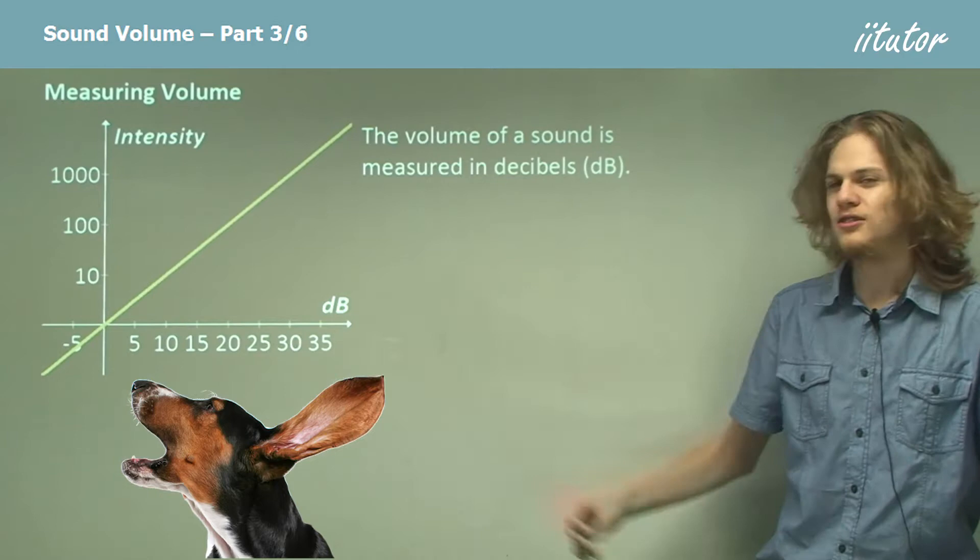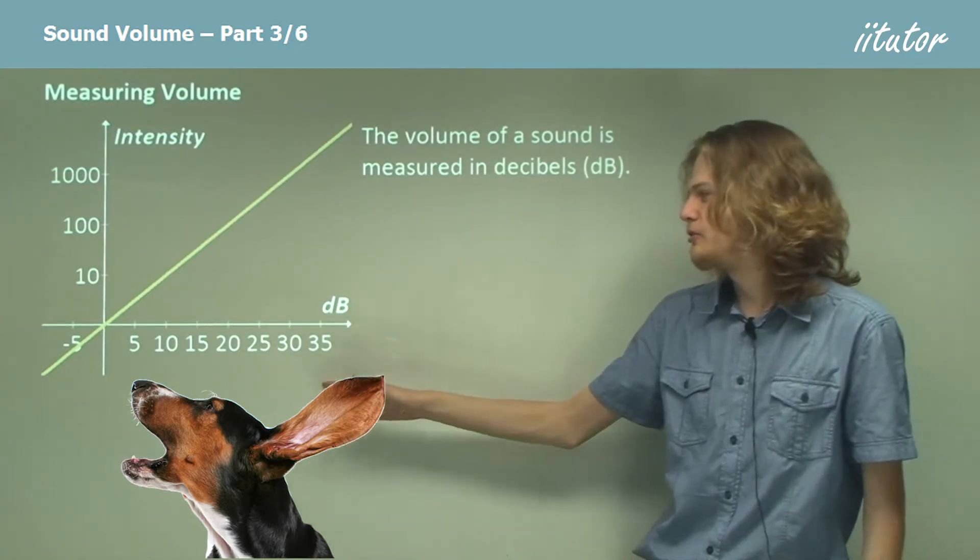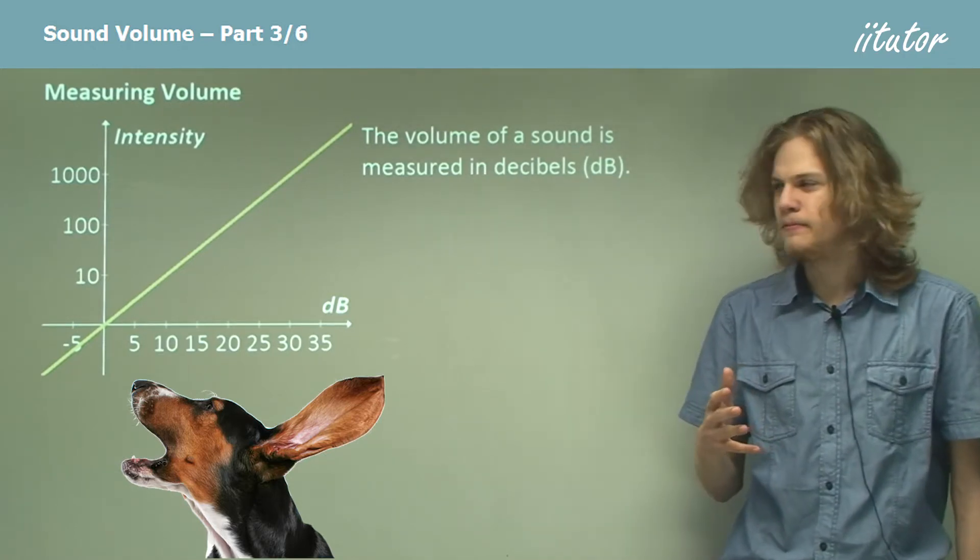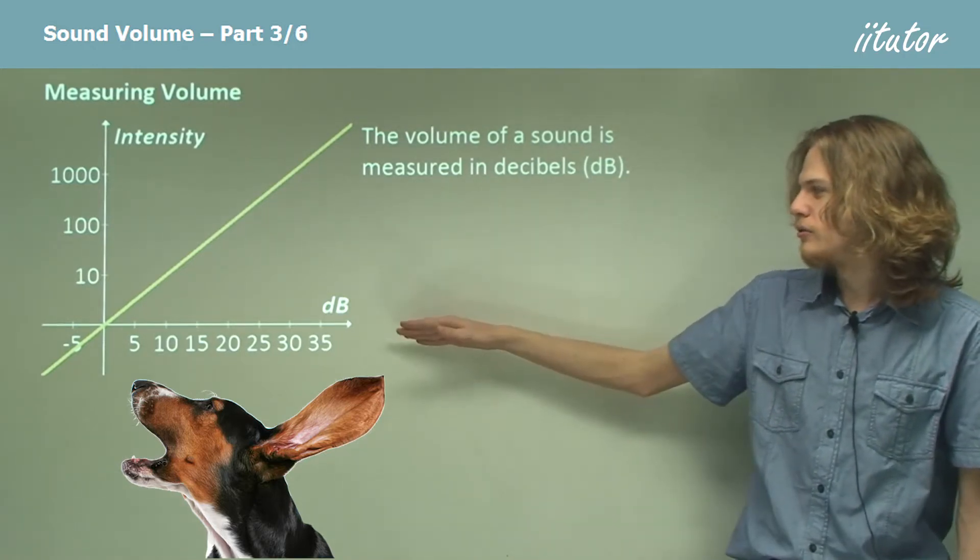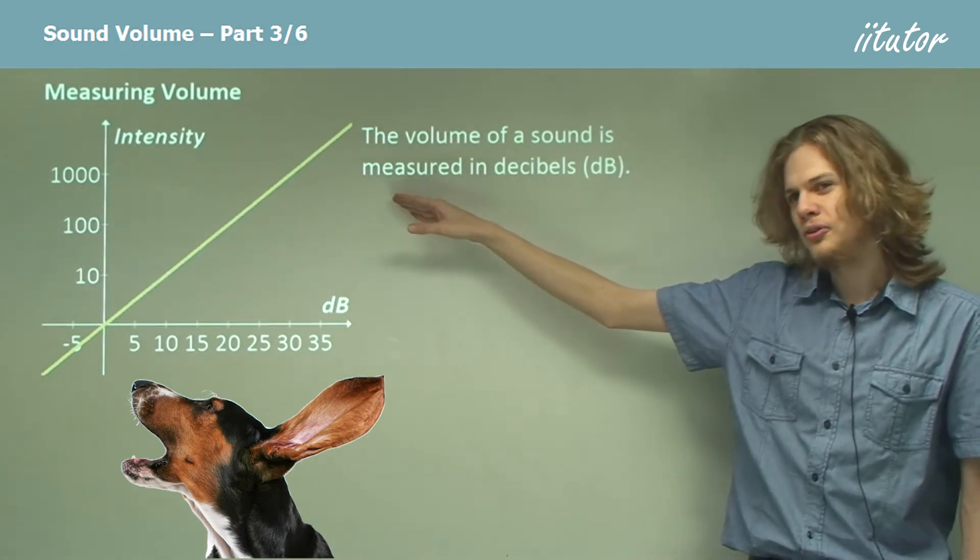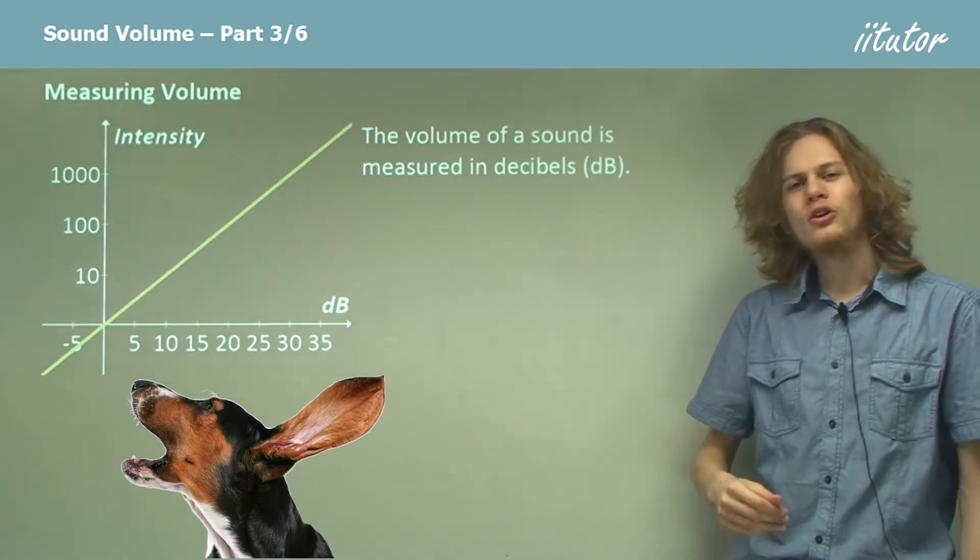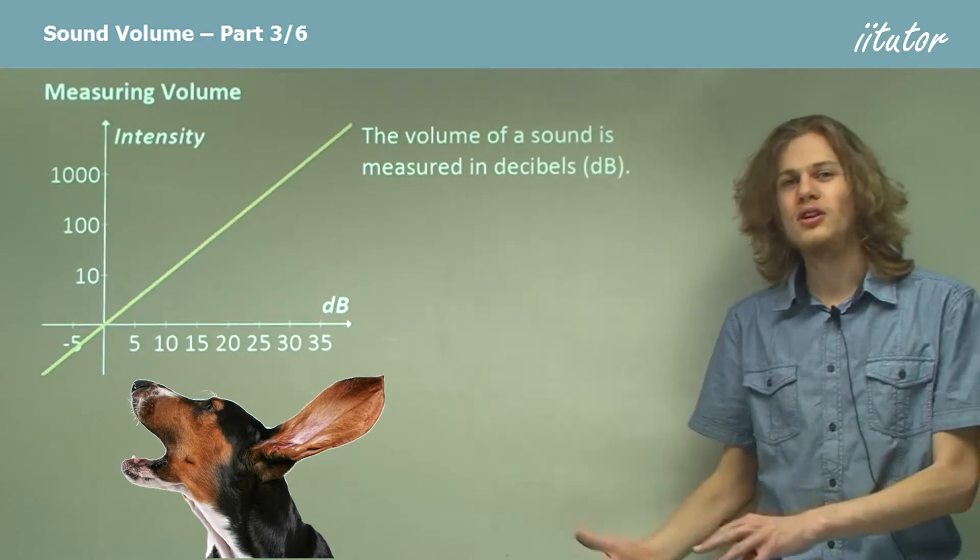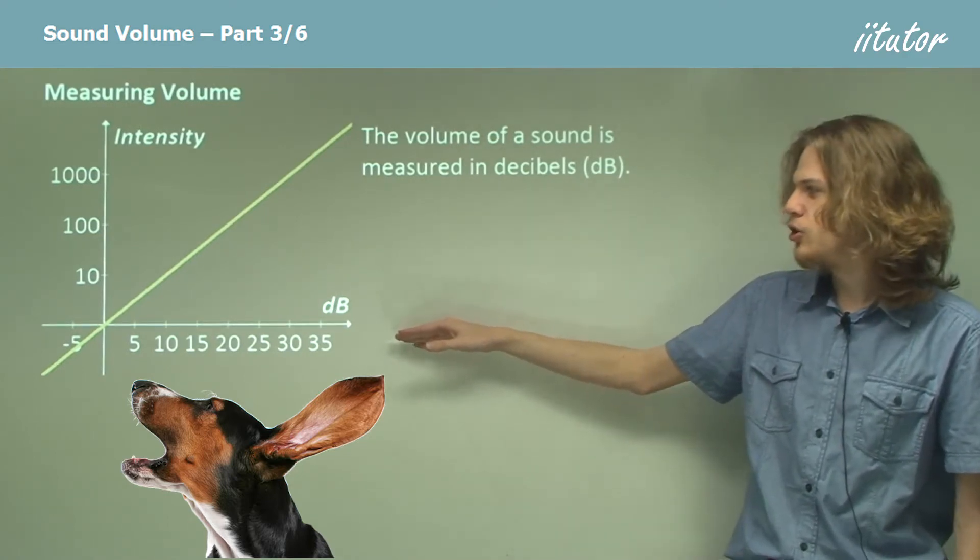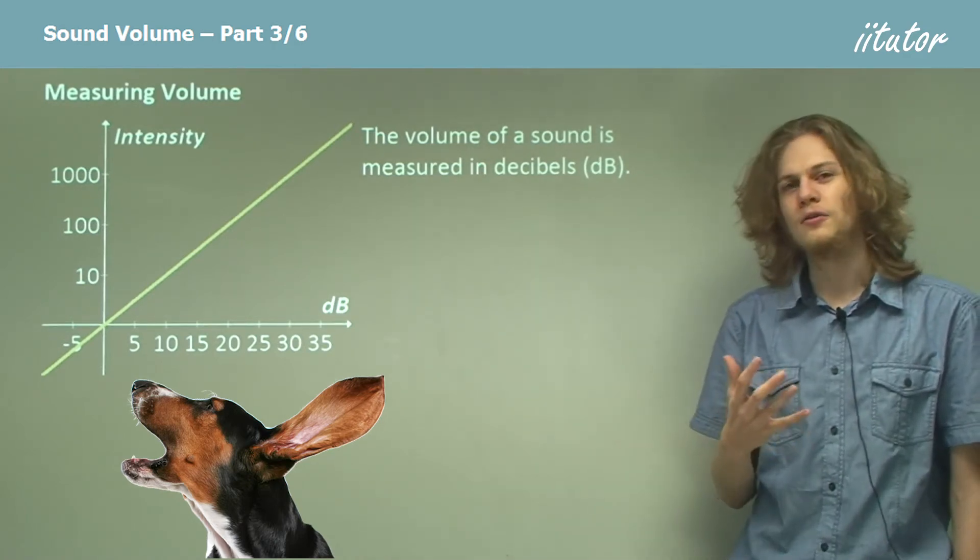On the x-axis, it's fair enough - 5, 10, 15, 20, and so on. But hang on, look at the y-axis. We're going to 10, to 100, to a thousand. We're not going up by a certain number each time; we're going up by a certain factor.